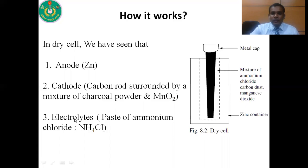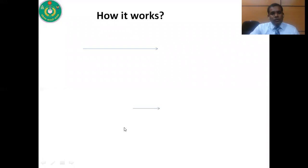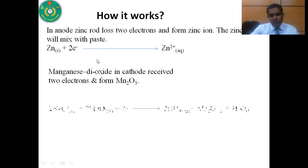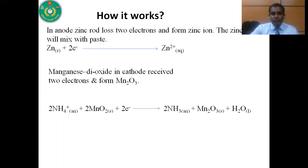The electrolyte is the paste of ammonium chloride. So in a dry cell we have three things: anode, cathode, and electrolyte. At the anode, zinc loses two electrons and forms zinc ions (Zn²⁺), which mix with the paste. These two electrons move to the external circuit and come to the cathode. At the cathode, manganese dioxide receives the two electrons and produces Mn₂O₃.